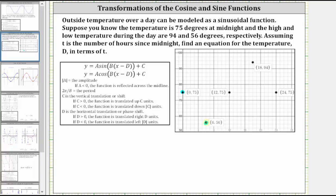After the low temperature, the temperature begins to rise, reaches the 75 degrees again, continues rising, and then reaches the high temperature of 94 degrees. Therefore six hours after the temperature is 56 degrees, the temperature reaches 75 degrees again, which gives the ordered pair 12 comma 75. The temperature keeps rising, and reaches a high temperature six hours later, which gives us the ordered pair 18 comma 94.